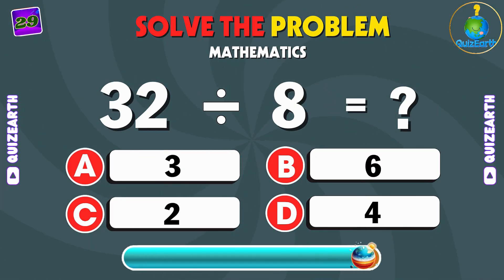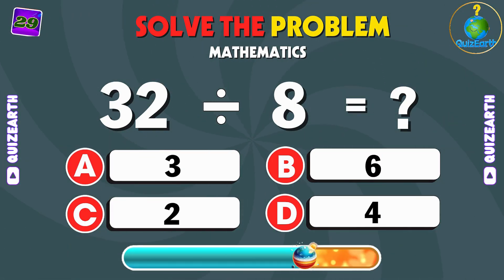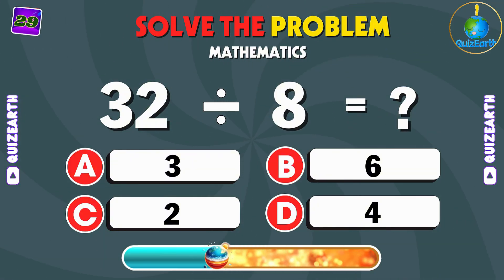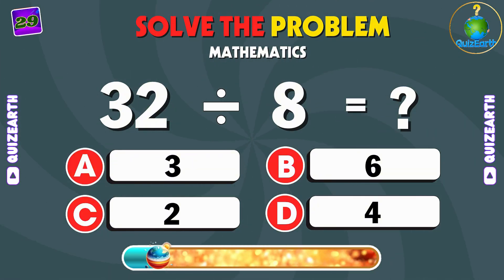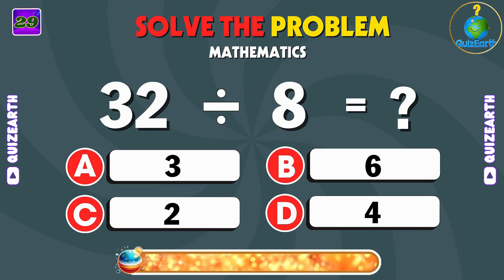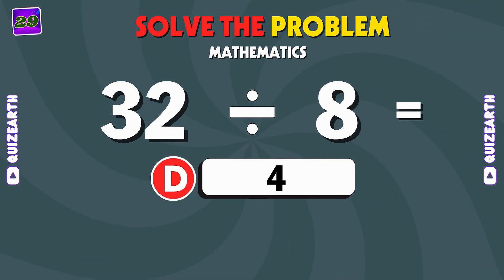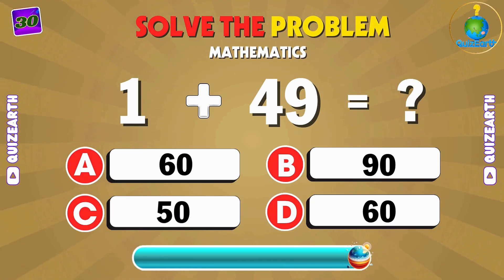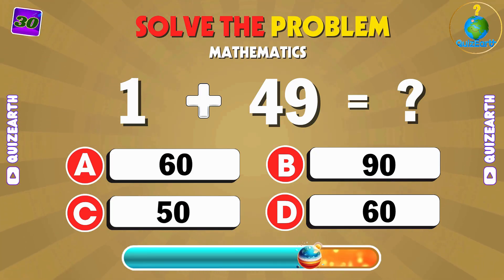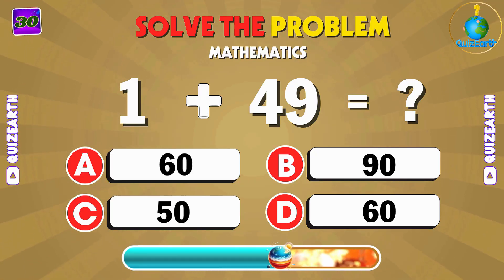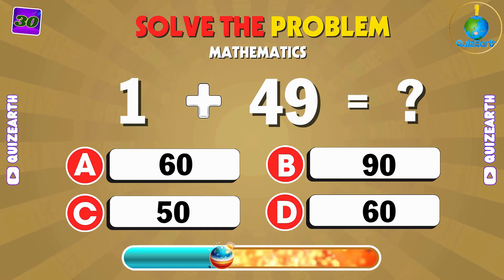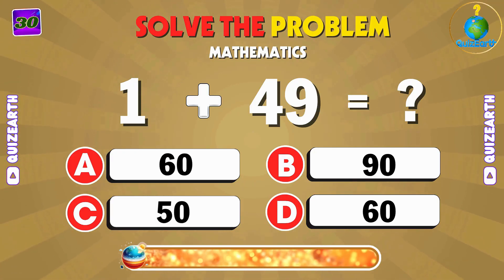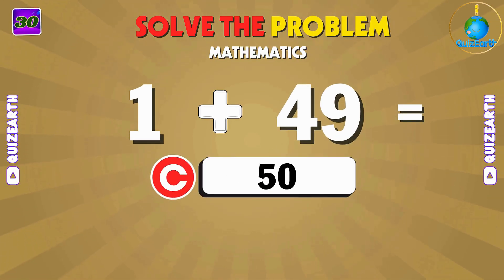Divide 32 by 8 — what's the answer? D: 4. Add 1 to 49 — what's the total? C: 50.